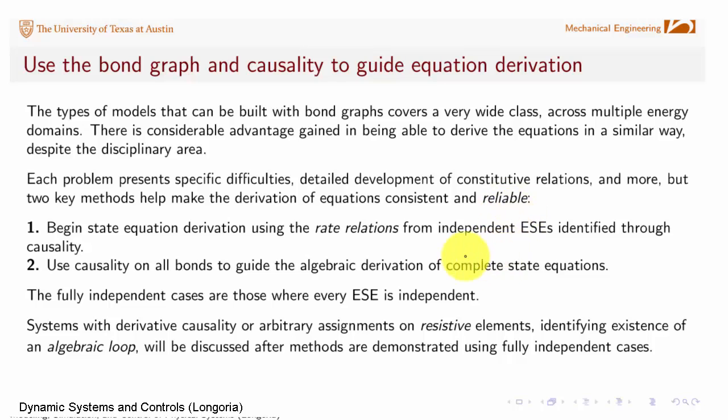And two key things help. One is that we can always begin the state derivation using the rate relations from the independent energy storage elements. And that can be found consistently using causality. There's no more guessing as to what equations need to be derived. That's always going to be known. The other thing which I want to illustrate through some examples is that you can use the causality that you've applied onto the bonds to help guide the actual algebra that you're using. And I'll try to illustrate that as we move along. And that can save you a lot of time.